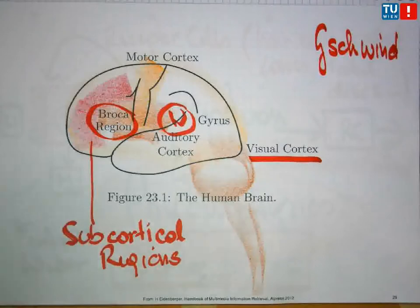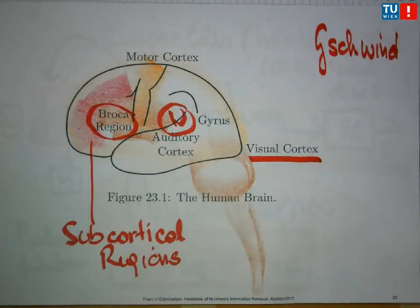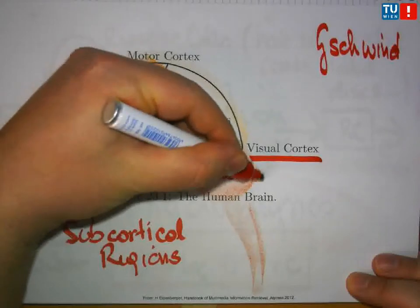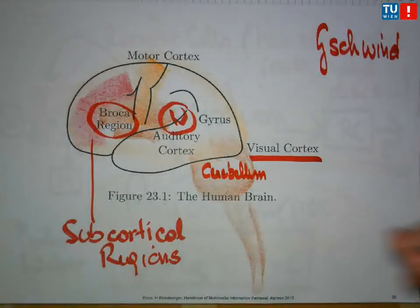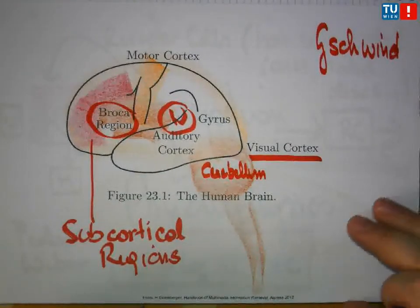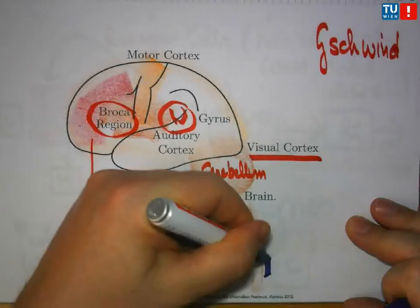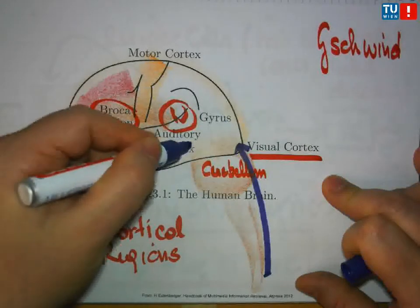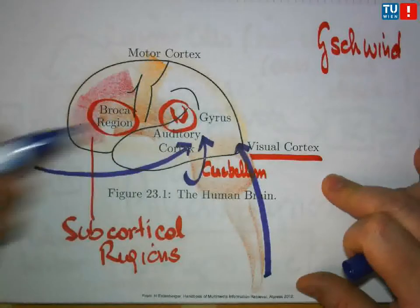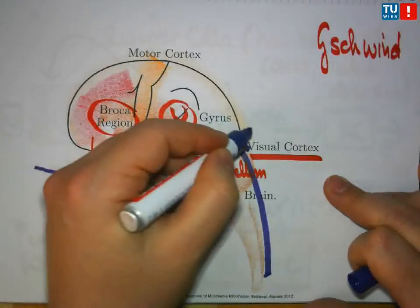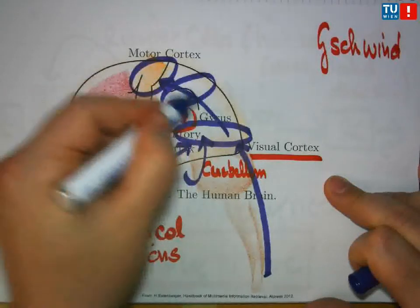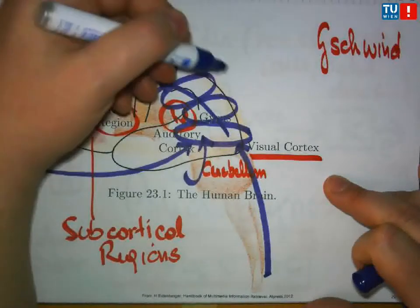Norman Schwindt was an American psychologist who defined details of this model of semantic information processing in the human brain. The general line of operations in the brain is that we have input from receptor cells coming from the eyes, coming from the ears, and these stimuli are processed in a layered fashion—building, as we would call them in IT, pipelines, processing chains, so-called pathways.